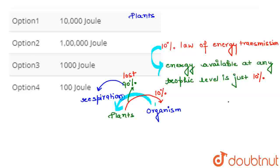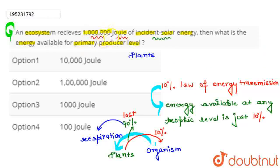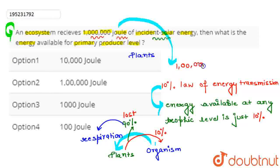So, you can see here, the ecosystem receives 10 million joules of incident solar energy. On that basis, the plants will use it and 10% will be available. So, 10% of 10 million joules is 1 lakh joules. This is the energy that the plants store or receive. The first option is 10,000 joules, and the second option is 1 lakh joules — the correct answer is the second option.